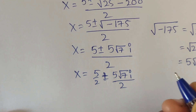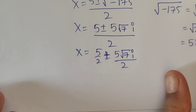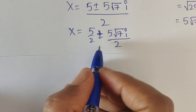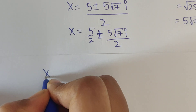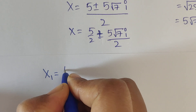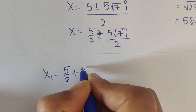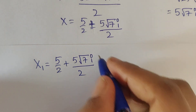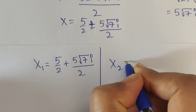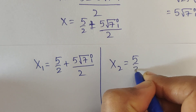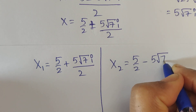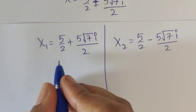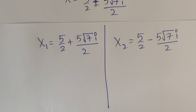Splitting the solution into two parts: x₁ equals 5 by 2 plus 5 square root of 7 i divided by 2, and x₂ equals 5 by 2 minus 5 square root of 7 i divided by 2. These two values are complex numbers.